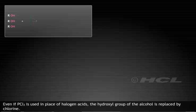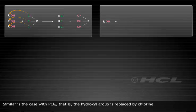Even if PCl3 is used in place of halogen acids, the hydroxyl group of the alcohol is replaced by chlorine. Similar is the case with PCl5, i.e., the hydroxyl group is replaced by chlorine.